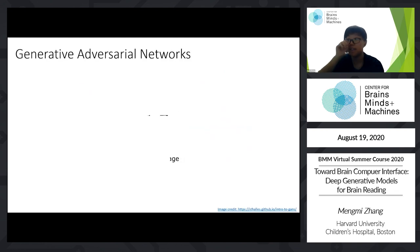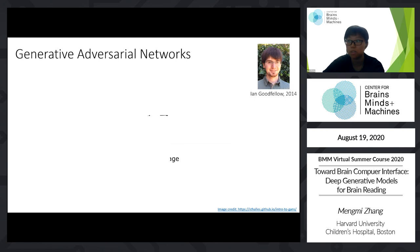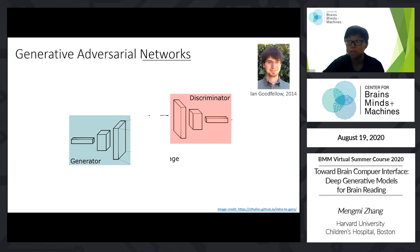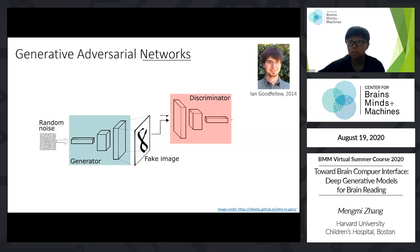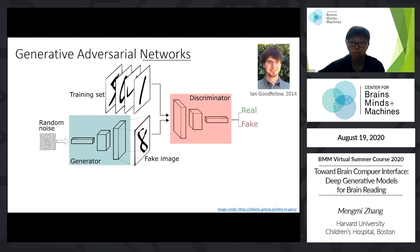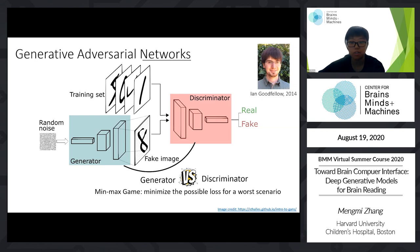Now let's talk about GANs. GAN was first invented by Ian Goodfellow in 2014 and has since been a popular research topic. GAN consists of two networks: a generator and a discriminator. The generator takes a random noise vector and generates an image. The role of the discriminator is to tell whether a given image is real or fake — that is, generated by the generator.